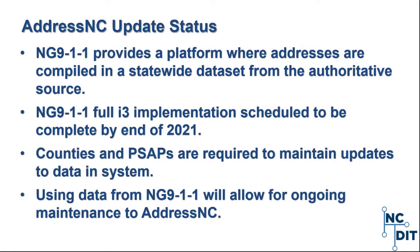In terms of the update status for AddressNC, we are seeing the Next Generation 9-1-1 project as the platform to receive address data directly from the authoritative source — the local governments. The full implementation of Next Generation 9-1-1 using the I3 standard, where GIS data is being used throughout the state for 9-1-1 call routing, is ongoing and hoping to be completed by the end of 2021. With the Next Gen project, counties are being asked to provide updates on a monthly basis, and since counties and PSAPs are required to maintain updates in that system to ensure proper call routing, we are seeing this as a way to provide ongoing updates to AddressNC — which has never been accomplished in previous efforts.